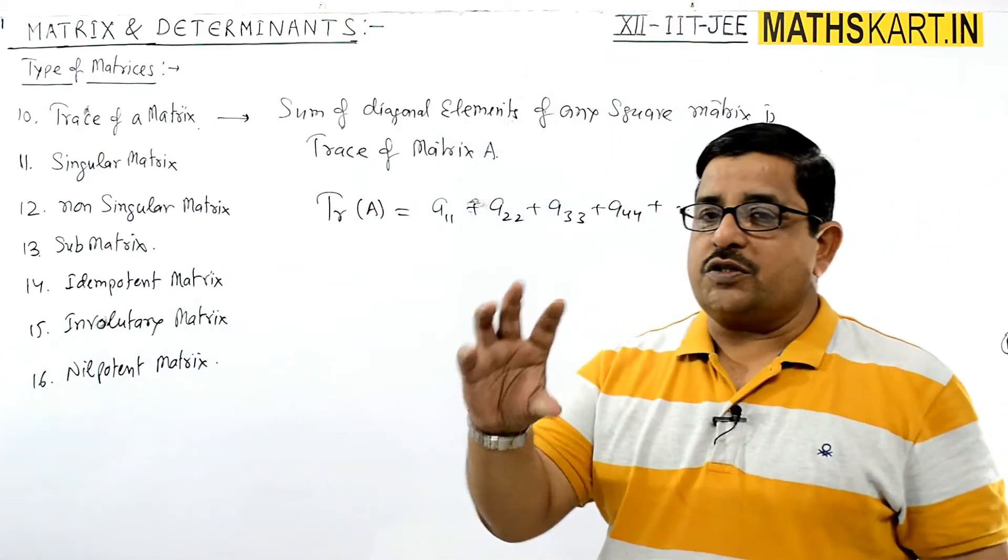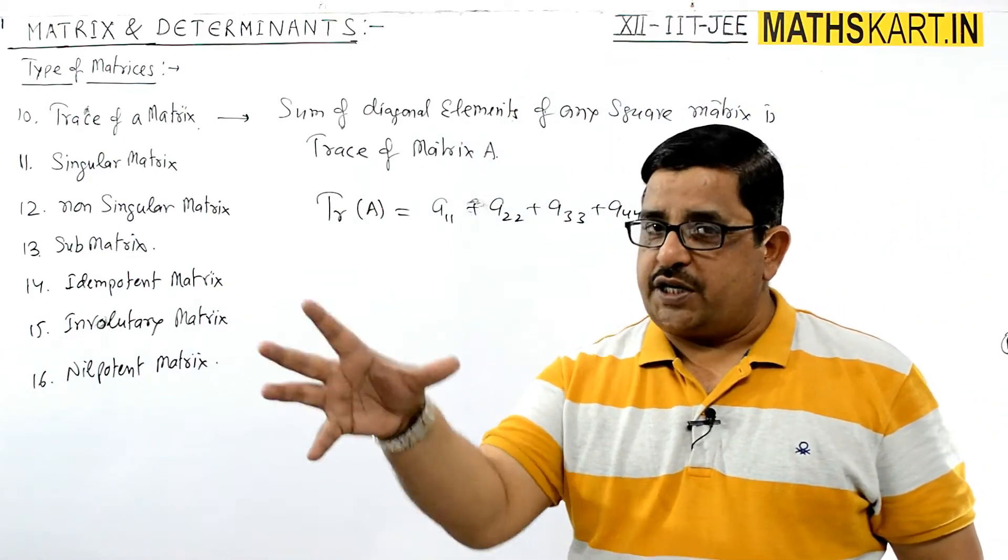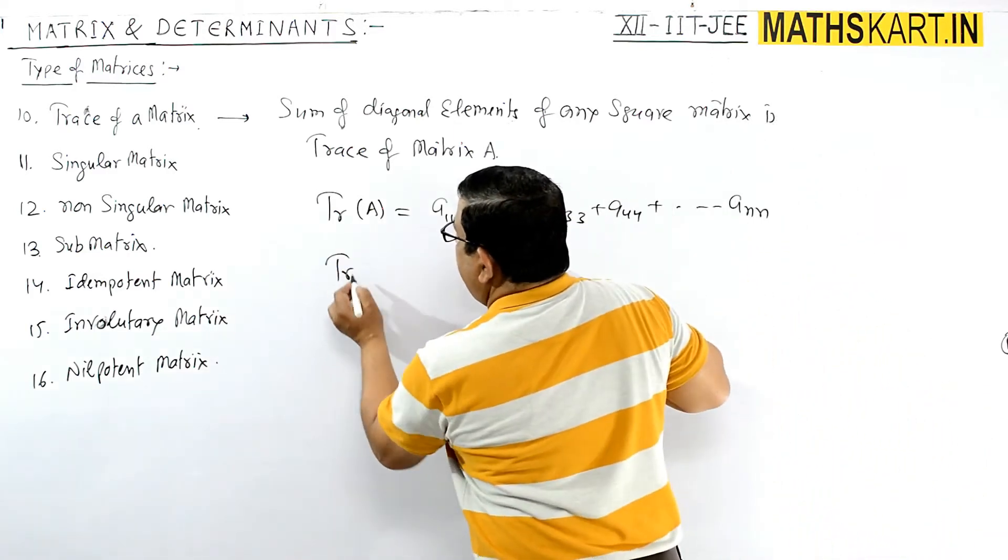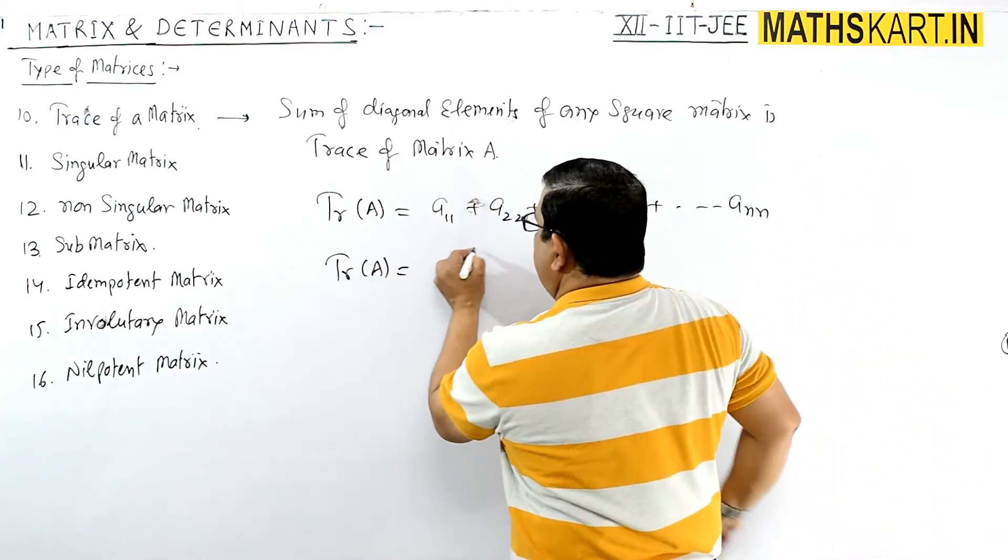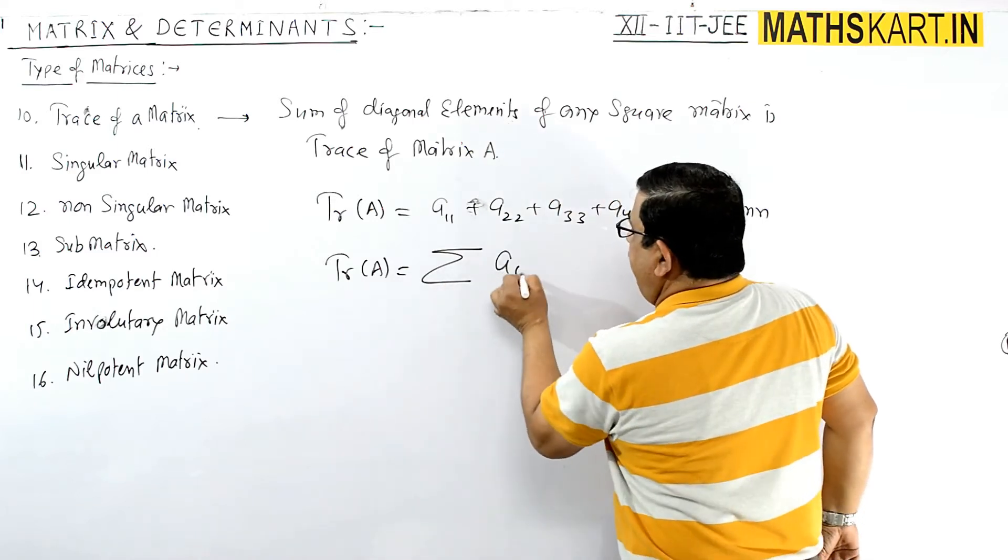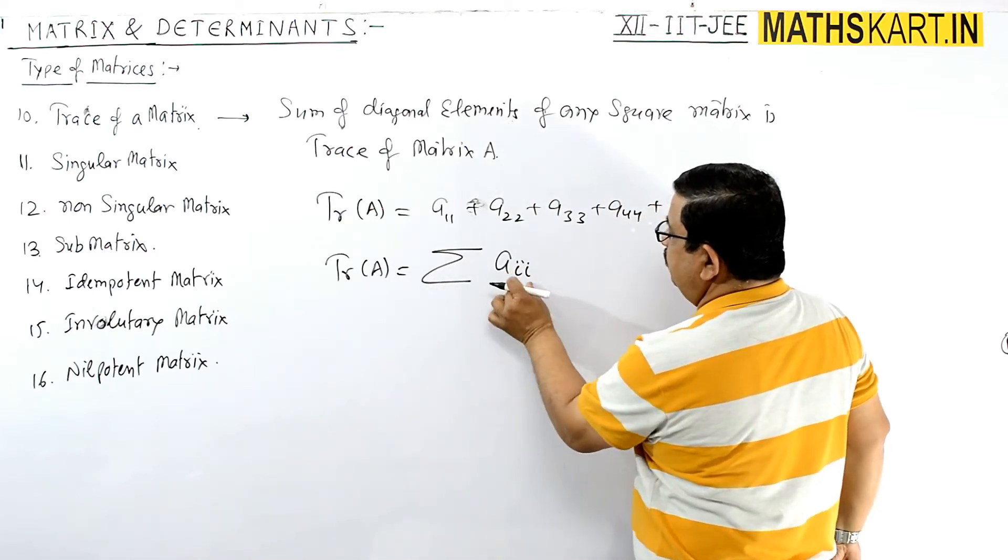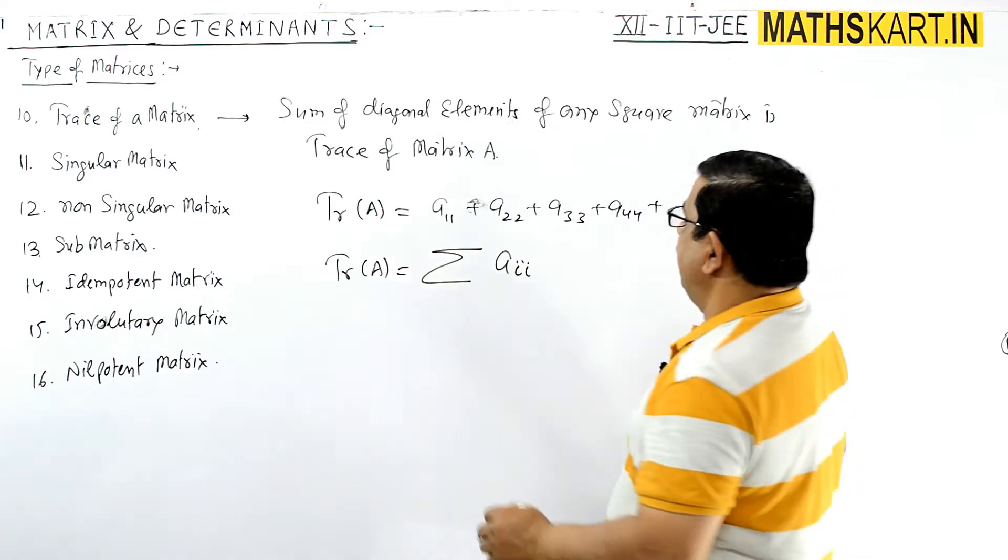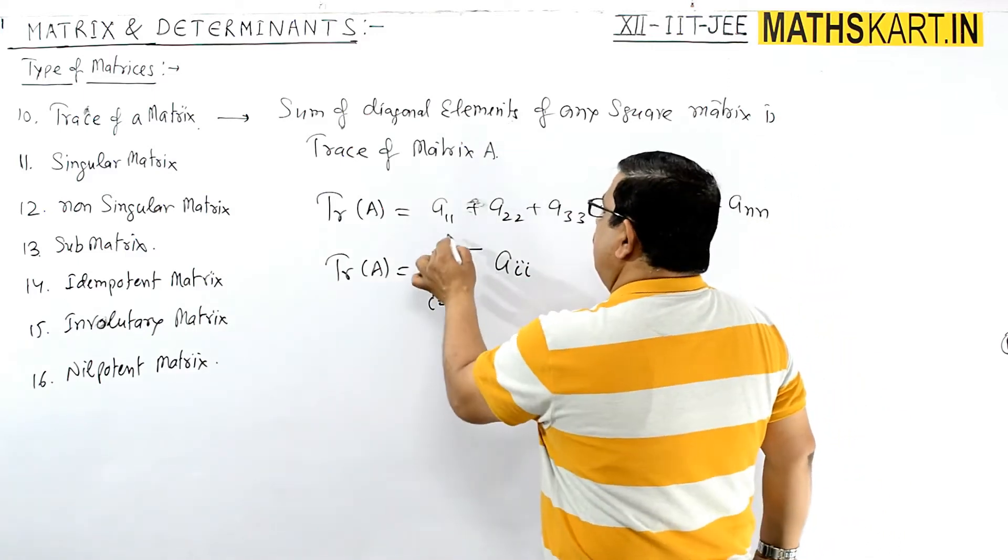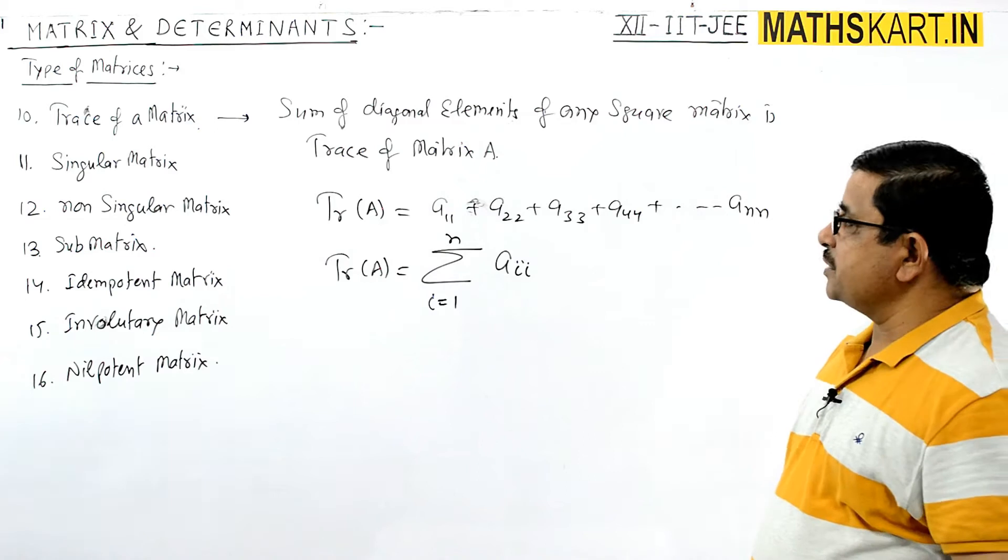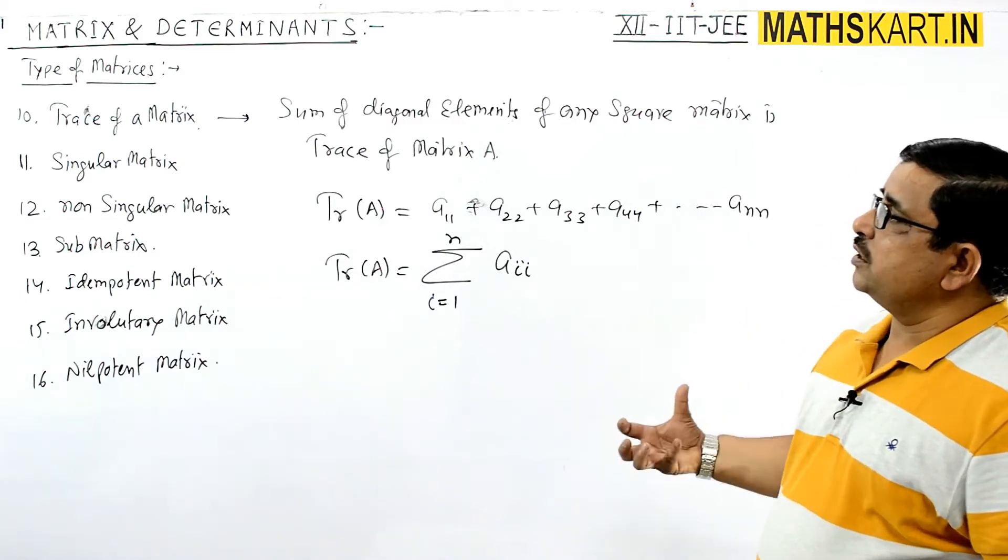It is going up to ANN because in the diagonal elements I equals to J. So this one can also be written as trace of A can be written as summation of AII, where I equals to J, and I starts from 1 to N.